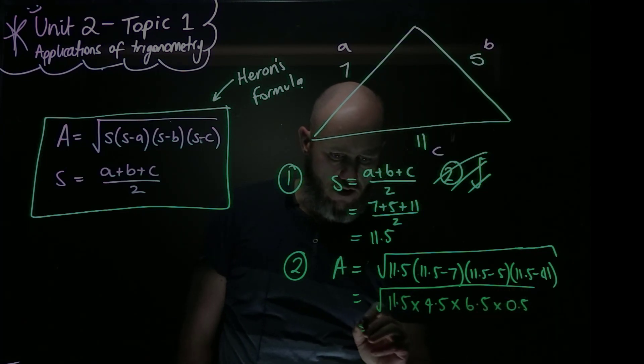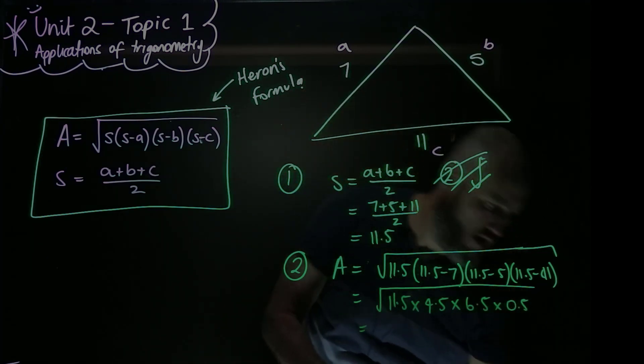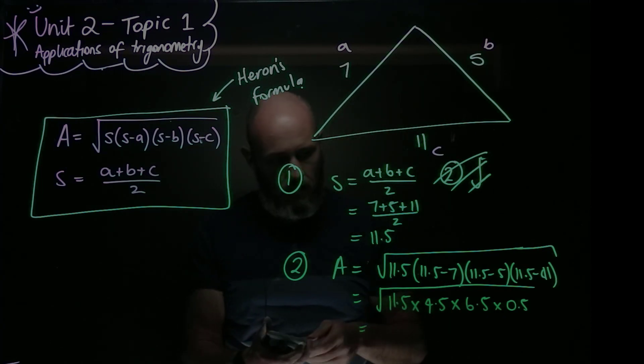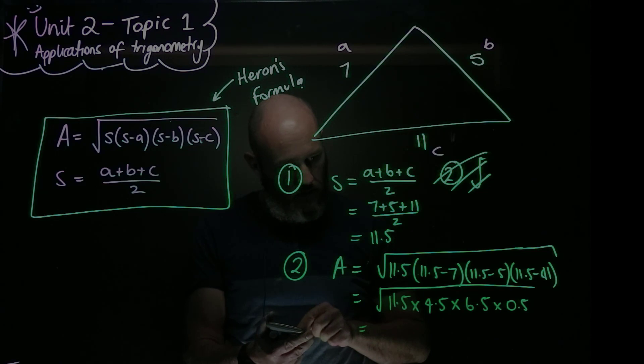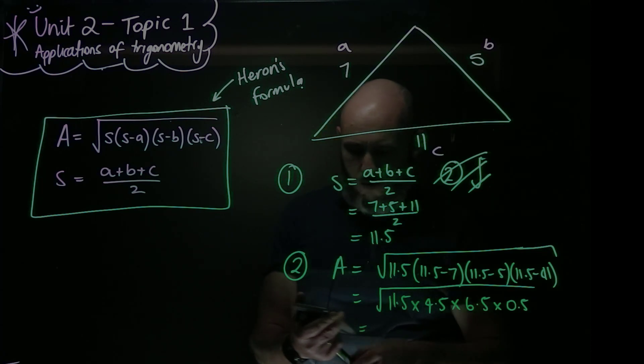And now I can put that in my calculator and evaluate it for the area. 11.5 times 4.5 times 6.5 times 0.5 is equal to 168.1875.